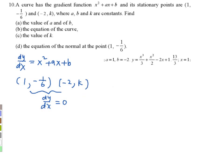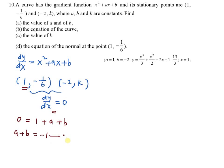The first one: x equals 1, dy/dx equals 0. So you have dy/dx equal to 0 with x equal to 1 — 1 squared is 1, then plus a plus b. So you have a plus b equal to negative 1. This is the first equation.